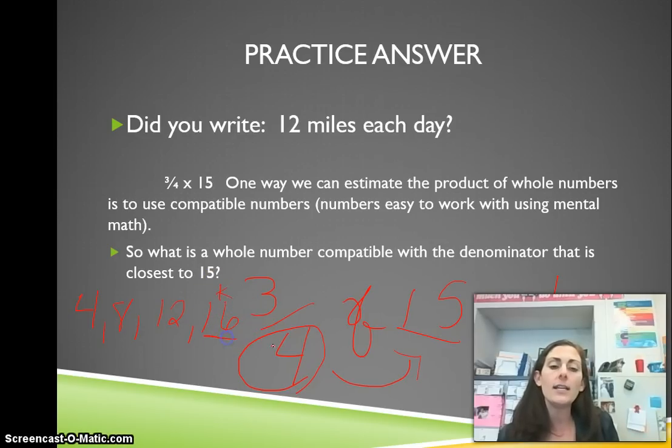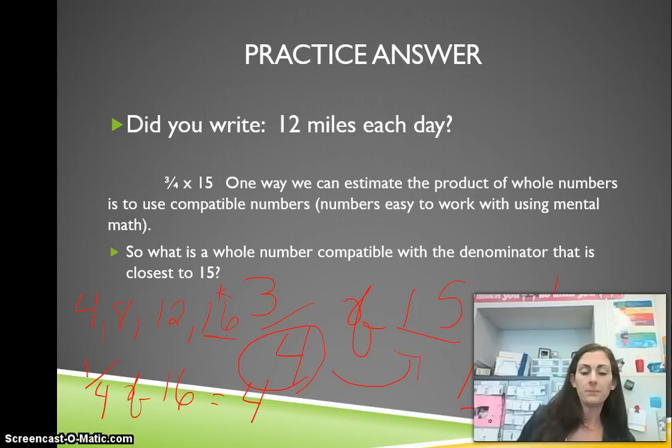So one-fourth of 16 equals 4. So three-fourths would be 4, 8, 12. So three-fourths of 15 would be 12 miles. There's going to be another one.